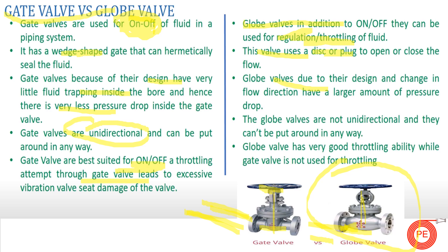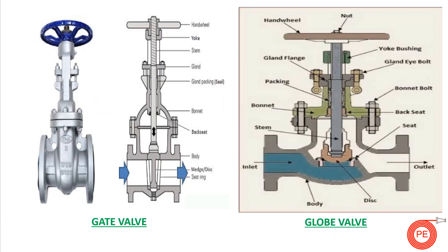Gate valves are best suited for on-off service. A throttling attempt through a gate valve leads to excessive vibration and seat damage. Globe valves have very good throttling ability while gate valves should not be used for throttling. Another basic difference is cost — between the two valves, globe valves are on the costlier side. Wherever we require throttling as the basic service, we go for globe valves. If the primary need is on-off, we select gate valves.